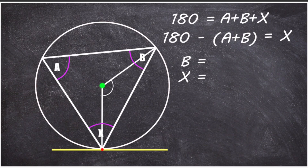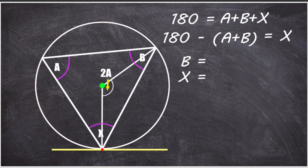I'll start by figuring out the center angle. The theorem states that the angle at the center is twice the angle at the edge, which means the value of the center angle is 2a. Let's put the other values back. Considering the triangle created within the main triangle, two of its edges are the length of a radius, so we have an isosceles triangle.